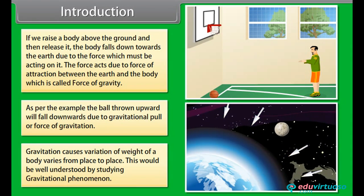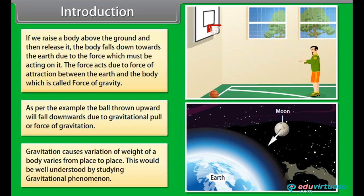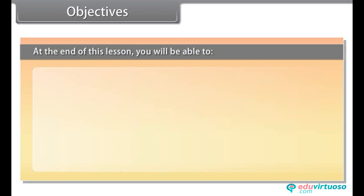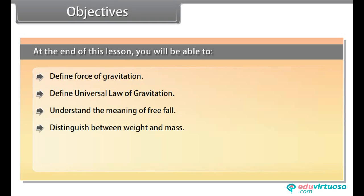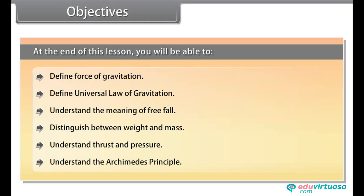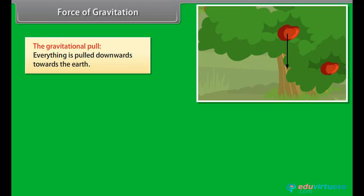Gravitation causes variation of weight — the weight of a body varies from place to place. This would be well understood by studying gravitational phenomenon. Objectives: at the end of this lesson you'll be able to define force of gravitation, define universal law of gravitation, understand the meaning of free fall, and distinguish between weight and mass.